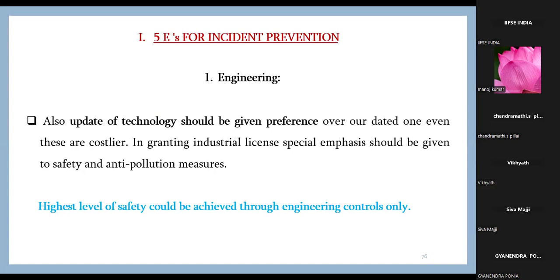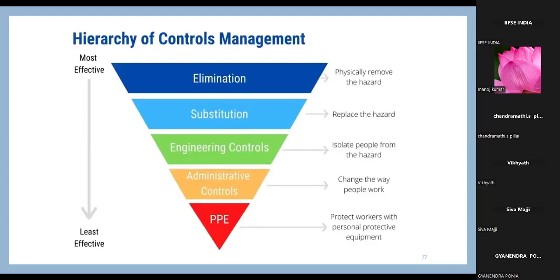PPEs are the last resort, not the primary means of saving a person. The first priority should always be engineering controls. The hierarchy of controls is: first, elimination — physically remove the hazard; second, substitution; third, engineering control; fourth, administrative control; and last, PPEs. For work at height, you cannot eliminate or substitute, so it starts from engineering controls.